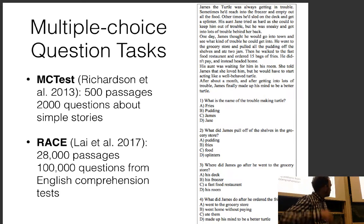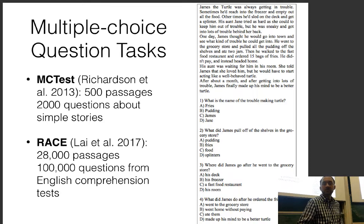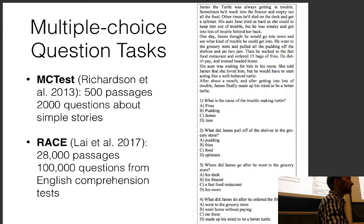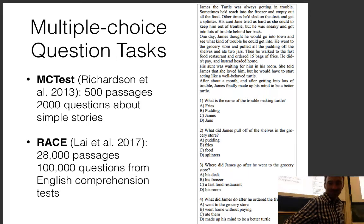There's also a nice dataset made by Lionel here at CMU, based on regular English comprehension test questions from Chinese high school or middle school exams. These are designed for humans and are actually quite hard — a lot of the questions require reasoning and complex inference. A CMU PhD student gets 95% correct; Mechanical Turkers get about 75%. State-of-the-art algorithms also get about 75%, so they're as good as Mechanical Turkers but not anywhere near as good as CMU students.